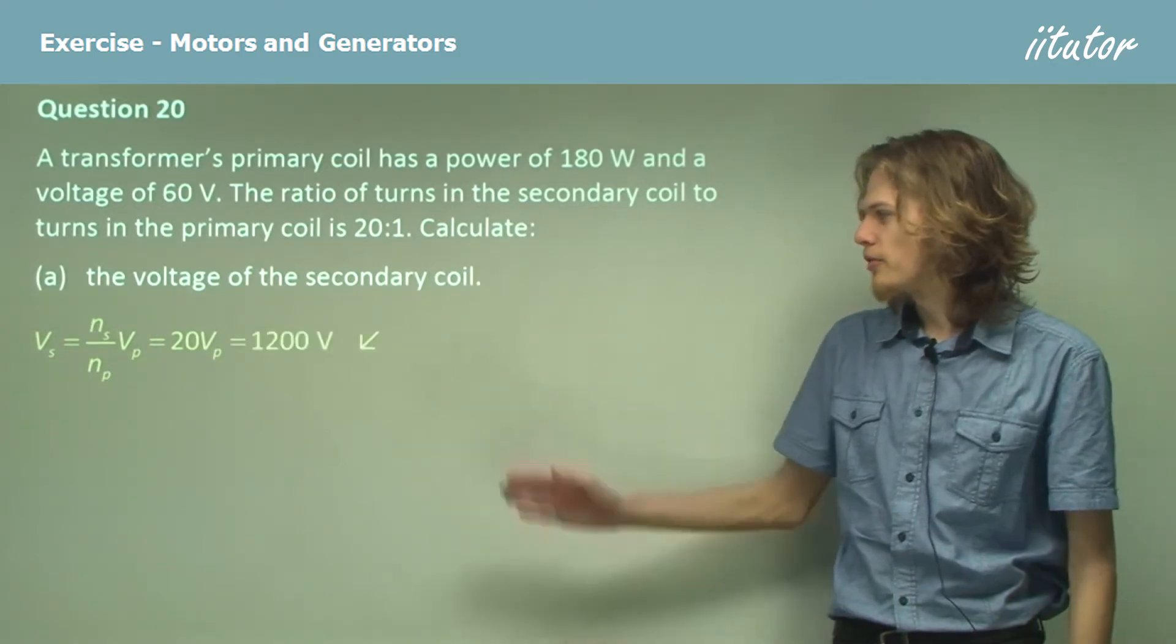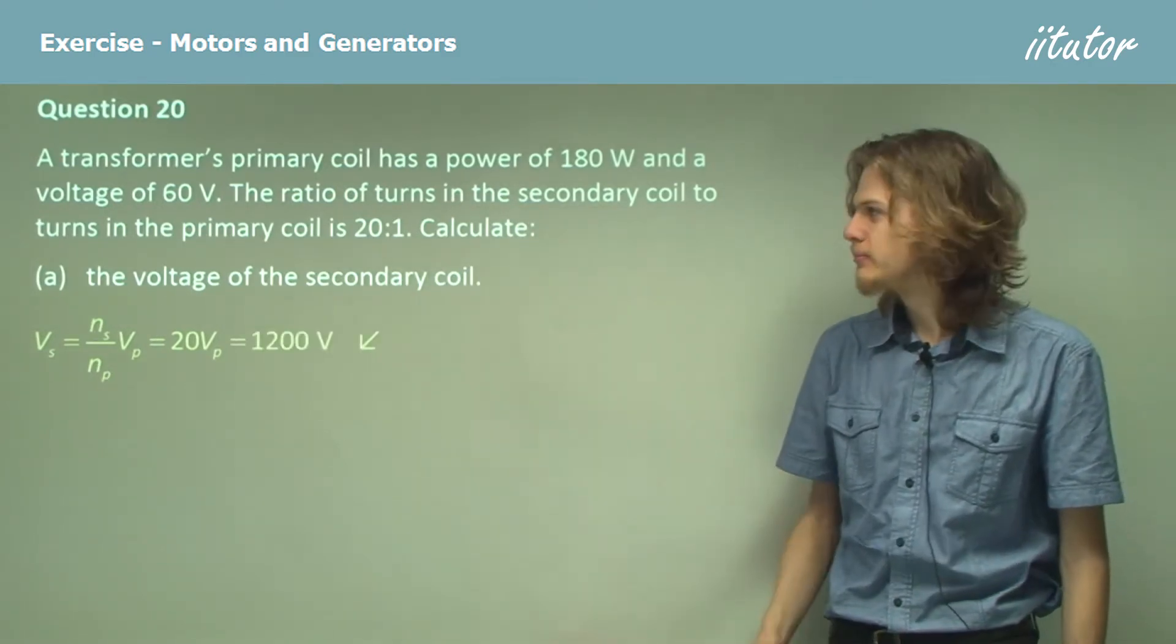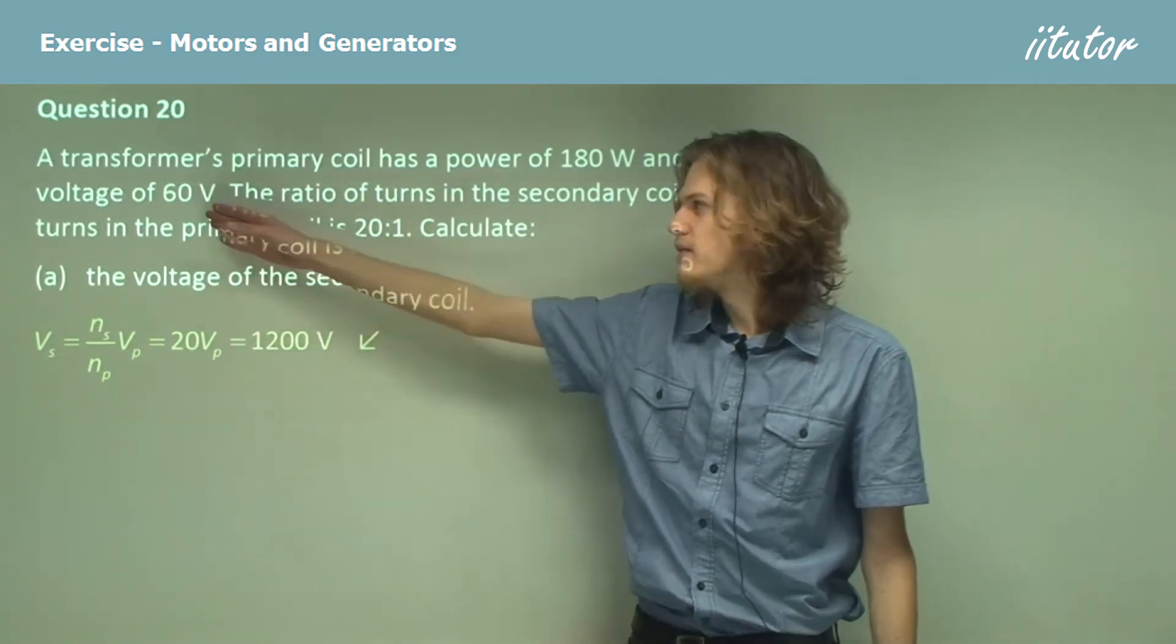And that will give us 1,200 volts. The voltage of the primary coil is, of course, given to us in the question.